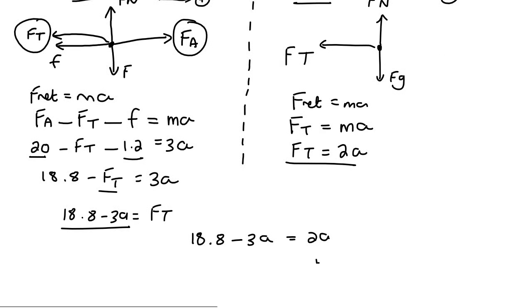That's going to give 5a equals to 18.8, and if we have to solve by dividing by 5, we get an acceleration of 3.76 meters per second squared.